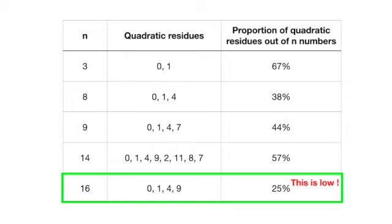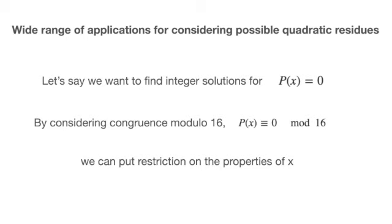In solving number theory problems, for questions which have to do with proving impossibility or showing that no solutions exist for a certain Diophantine equation, we want to go with the number n whose number of quadratic residues is fewest, as doing so allows us to put a lot of restriction and constraint on any possible solution.